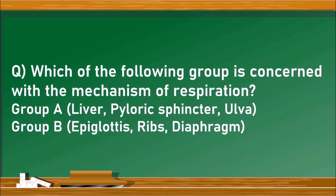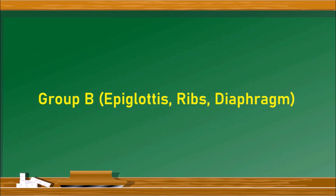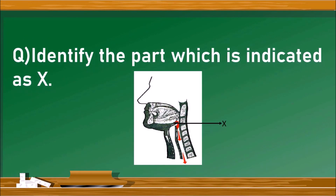Which group is concerned with the mechanism of respiration? Group A: liver, pyloric sphincter, ulva. Group B: epiglottis, ribs, and diaphragm. The answer is group B — epiglottis, ribs, and diaphragm — because the epiglottis prevents food from entering the respiratory tract, while the ribs and diaphragm help in the mechanism of breathing.